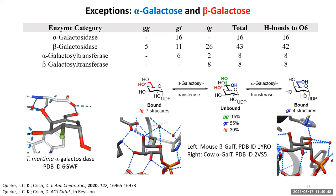Now let's move on to some of the exceptions. The alpha galactose series — both the hydrolases and the transferases — behaved pretty much as we expected, showing very high selectivity for the GT conformation. This is completely consistent with what we discussed before: the GG conformation for these systems is destabilized due to interaction with the axial O4. So these enzymes have evolved to bind the next most reactive side chain conformation. This preference is nicely illustrated in a crystal structure of T. maritima alpha-galactosidase, where a cyclohexene-derived inhibitor has the side chain that pretty much eclipses the pi bond, but still formally takes up an analog of the GT conformation because the side chain bond is still trans to the C4-C5 bond.